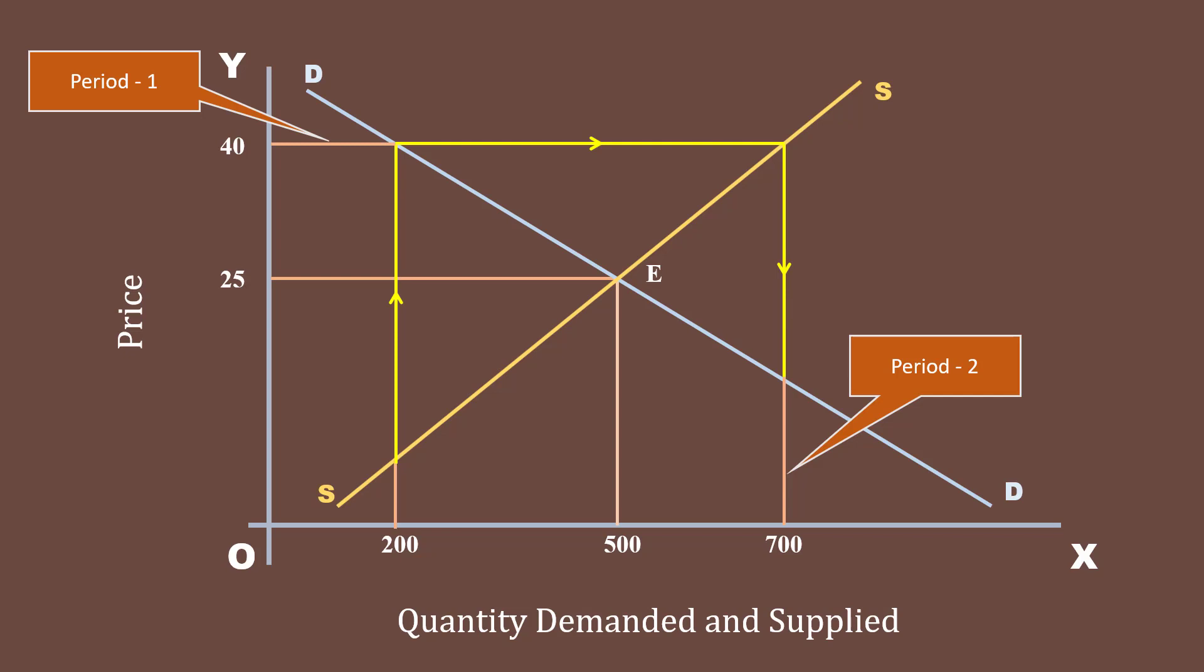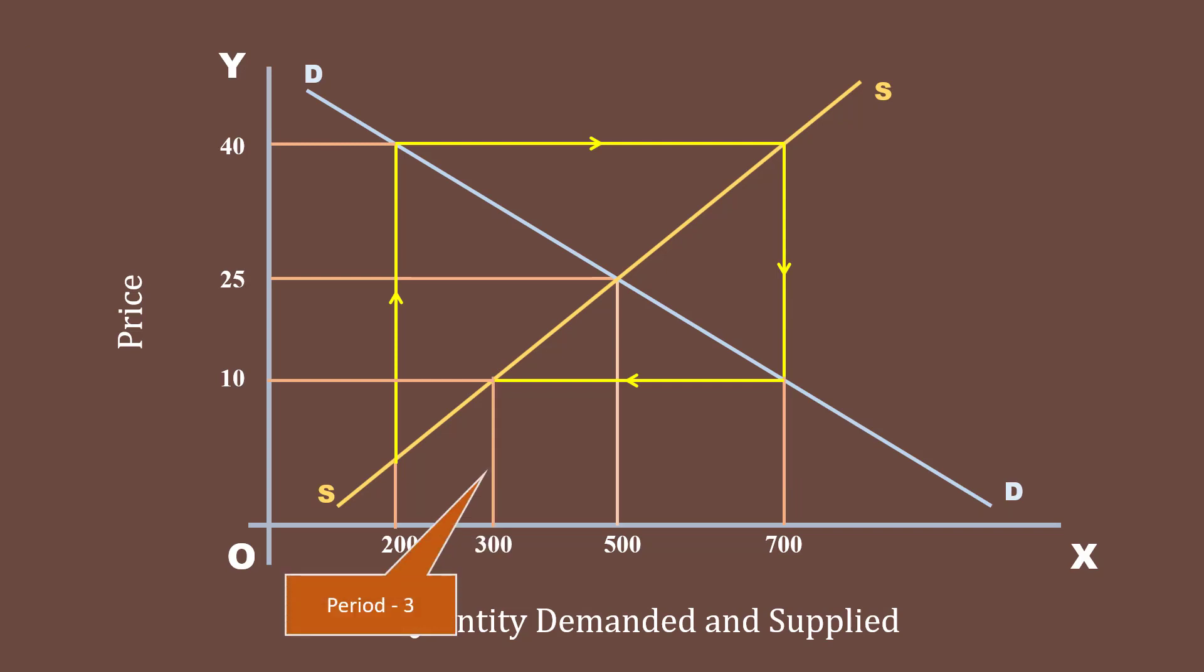Right. What happens after the adjustment of price and quantity? Again, the market is in disequilibrium. Supply in period 2 is fixed at 700 units. Given the demand curve DD, the buyers buy wheat at 10 rupees in the same period. In the next period, that is period 3, the farmers produce and supply 300 units of wheat. Supply being fixed at 300 units, given the demand curve DD, the buyers buy the output at 30 rupees.